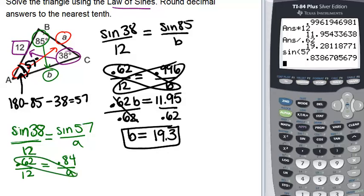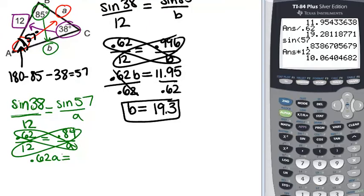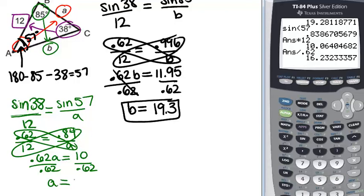Cross multiply. So we get 0.62A equals 0.84, which is in our calculator, times 12. So we get about 10. So 0.62A equals approximately 10. Divide both sides by 0.62, and we get our answer of A equals 10 in our calculator, divided by 0.62. So it's approximately 16.2.